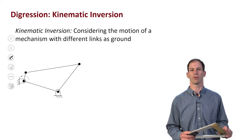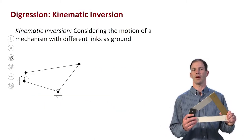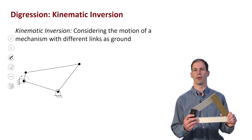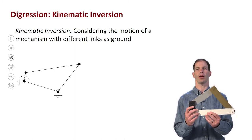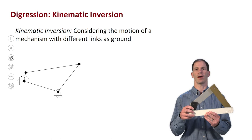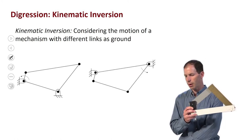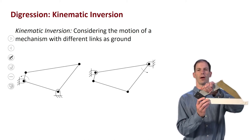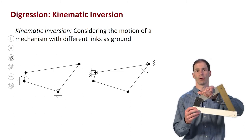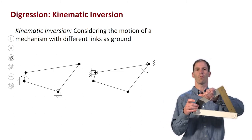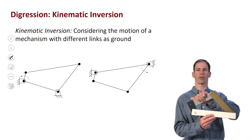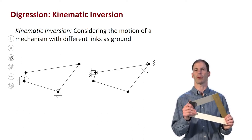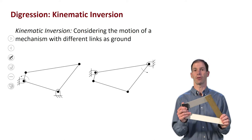So what is kinematic inversion? The idea is that I can take a four bar or six bar, whatever the mechanism happens to be, and I can change what link is pinned to ground. Right now I've got the white link pinned to ground, and I can look at the motion of the mechanism with respect to that white link. Alternatively, I could fix the coupler — this silver link — and say that is now ground, and look at the motion of the mechanism with respect to that. Because I've got four links, I've got four kinematic inversions for a four bar mechanism.